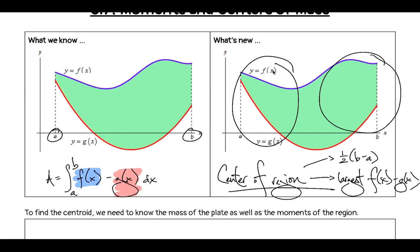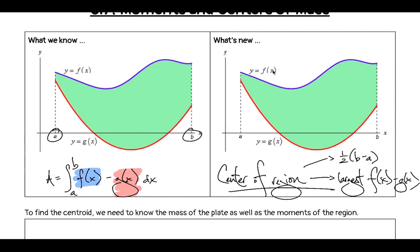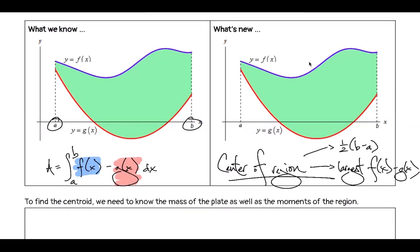Do we think our centroid is closer to a or closer to b? Probably closer to b. And is it closer to f of x or g of x? One student says f of x because of the concavity; another says g of x because the area is bigger there. That's exactly what we're going to figure out today.